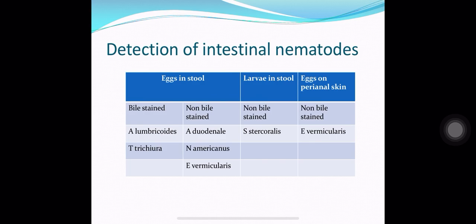Larvae in stool can be found in Strongyloides stercoralis; these are non-bile-stained. Eggs on perianal skin can be found in Enterobius vermicularis, which are also non-bile-stained. This concludes the introduction to intestinal nematodes.